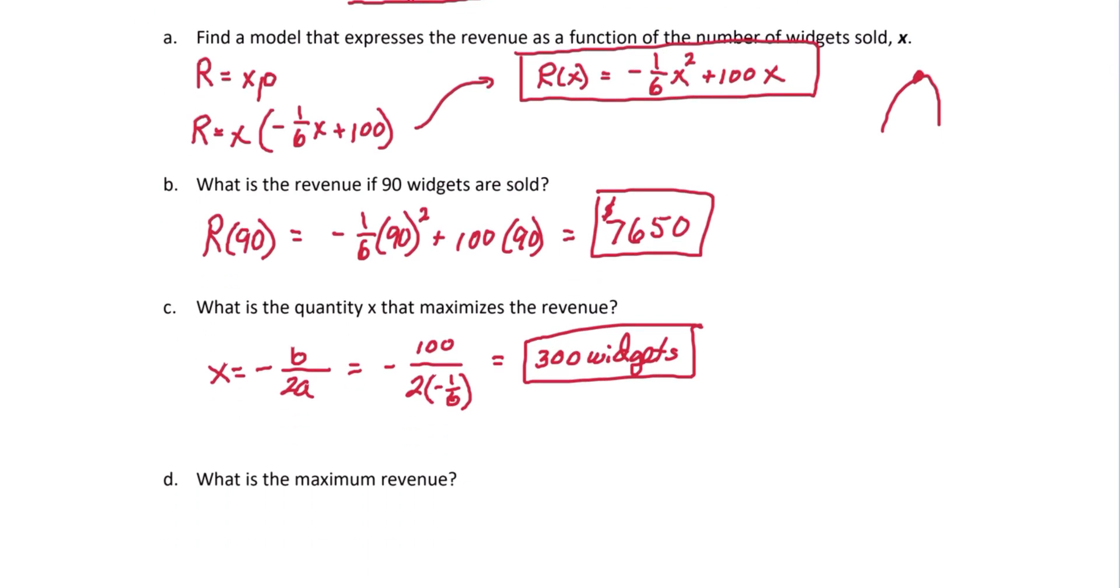Up next, we want to know what is the max revenue. To find that, we will simply plug 300 into the revenue function. Evaluate r at 300. Negative one-sixth times 300 squared plus 100 times 300. And here we get 15,000. And that's dollars.